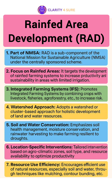Rainfed Area Development is one of the key sub-components of NMSA. This centrally sponsored scheme is aimed at promoting sustainable agriculture practices in vulnerable regions, particularly those dependent on rain for crop production.